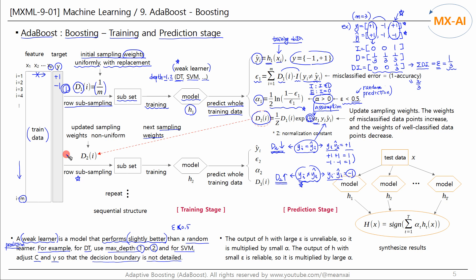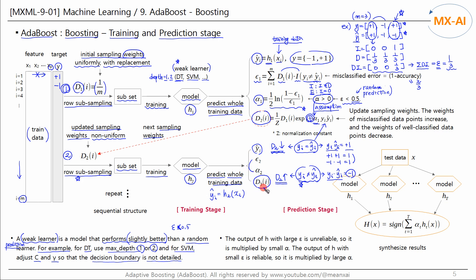In the second round, row subsampling is performed using the updated sampling weights, which are no longer a uniform distribution. A new subset is created, and model H2 is trained. We predict class Y over the entire training data again, then calculate Ŷ, epsilon, and alpha, and recalculate sampling weights for the next round. Unlike bagging's parallel structure, boosting is a serial structure. The more this process is repeated, the more misclassified data points are sampled — this is the core idea of Adaboost.